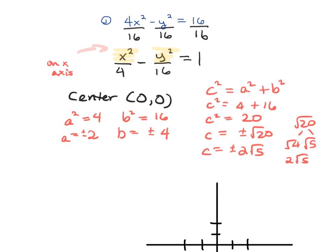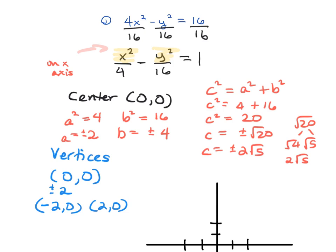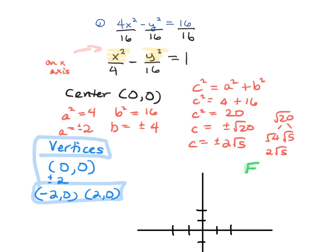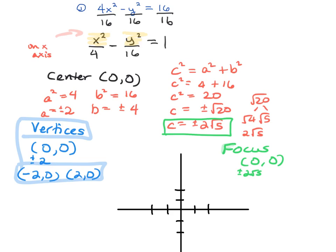Now I need to find my vertices. I'll take my center point, which is 0, 0, and add and subtract my a value to the x coordinate — since x squared was first. So my two vertices are at negative 2, 0 and positive 2, 0. For the focus points, I take 2 root 5 and add and subtract it to the x of the center. So the focus points are at negative 2 root 5 comma 0 and positive 2 root 5 comma 0. The focus point is always on the same axis as the vertices.